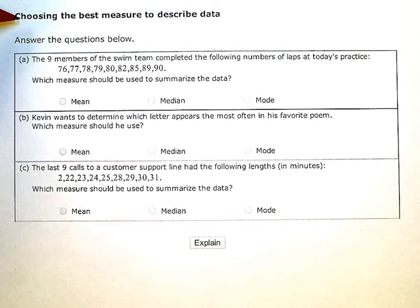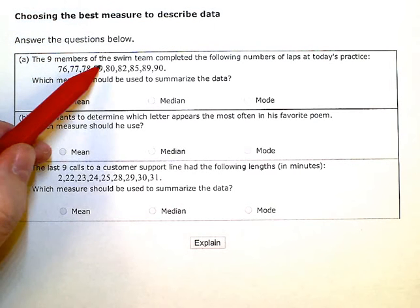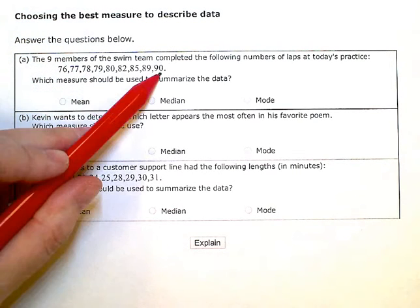Choosing the best measure to describe the data. Answer the questions below. So the nine members of the swim team completed the following numbers of laps at today's practice. We have one, two, three, four, five, six, seven, eight, nine numbers here for the nine swimmers.